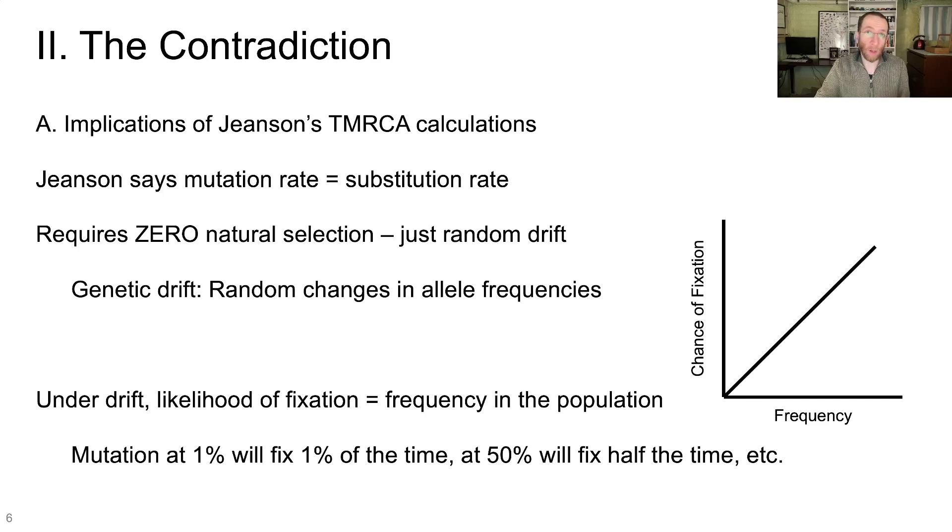Now under drift, the likelihood of a mutation achieving fixation, the likelihood of it ultimately becoming present at every possible site for that mutation in the population, that is equal to the frequency of that mutation in the population. It's a simple positive correlation, just a direct one-to-one association between those two numbers. So for mutations that are present at 1% frequency within a population, they'll achieve fixation 1% of the time. Mutations present in 50% of the population, they'll fix in that population half the time. That's the association between frequency and fixation if the only thing governing the frequency of the mutations is random genetic drift.